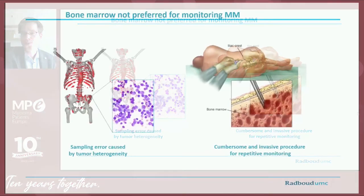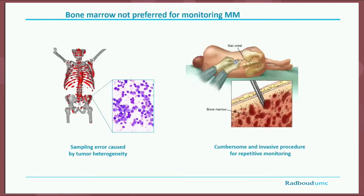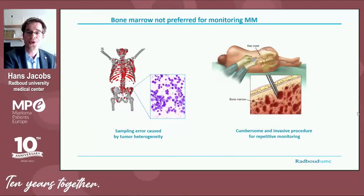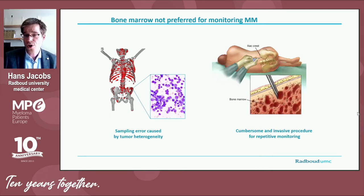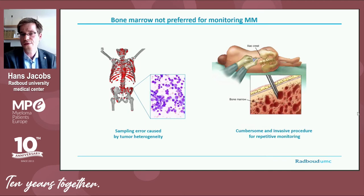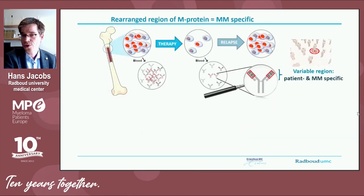Bone marrow biopsies are not ideal for repeated MRD monitoring. On one hand, the disease can have a patchy distribution, meaning some parts of the bone marrow are more affected than others, which could lead to sampling error. In some patients, myeloma cells may even grow outside the bone marrow, giving false negative results. In addition, bone marrow sampling is an unpleasant procedure that negatively affects the quality of life of myeloma patients. Therefore, our group set out to investigate whether it is possible to develop a blood test sensitive enough to measure minimal residual disease.